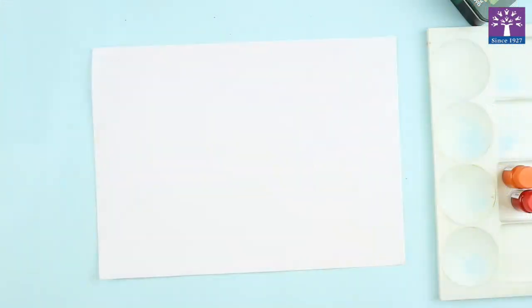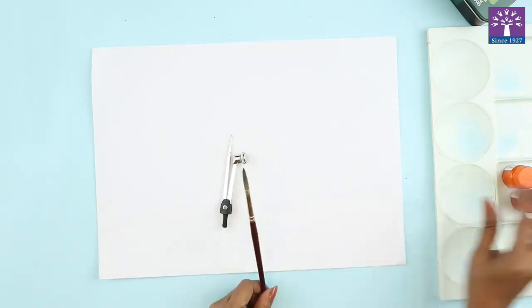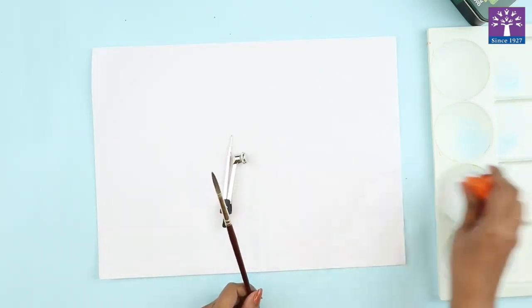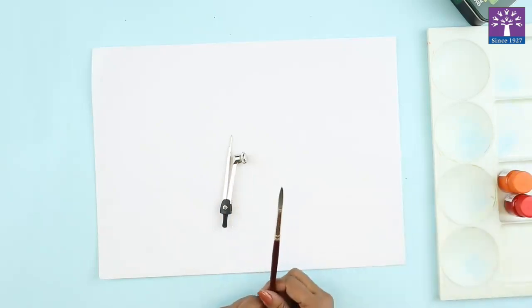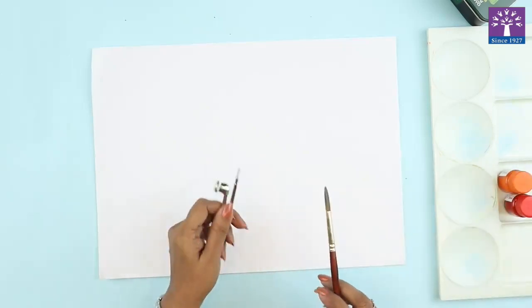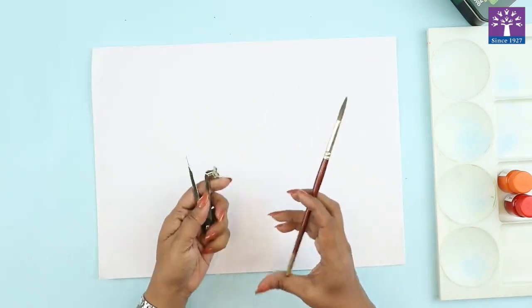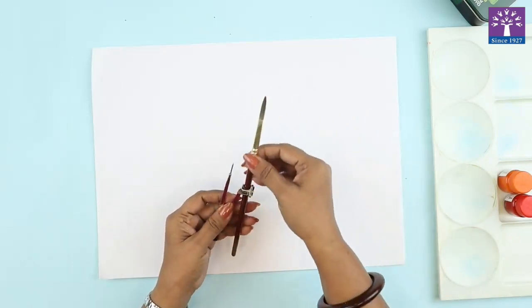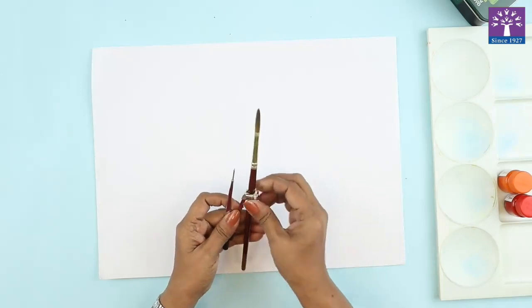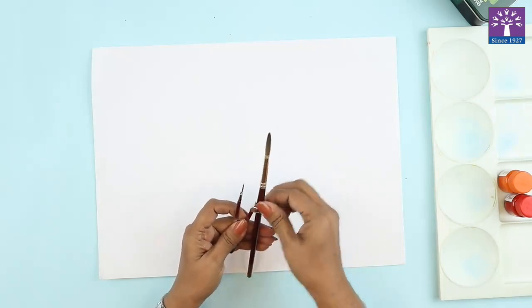Hello friends, our today's activity is compass painting. You will need a rounder from the geometry box, a brush, and some paints of your choice. So let's start. Fix the painting brush in the compass. We'll fix this just the way you fix your pencil.